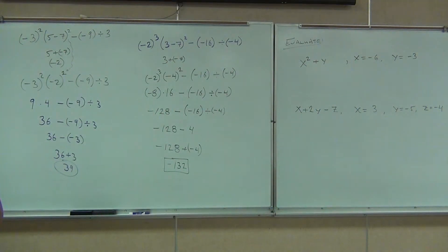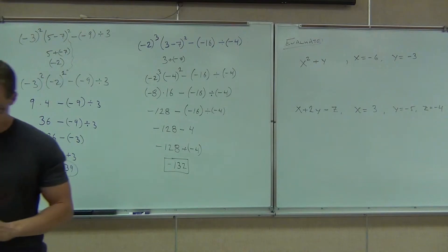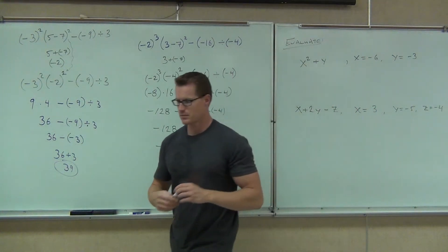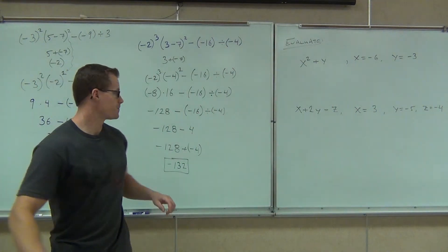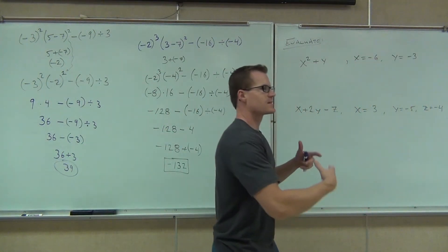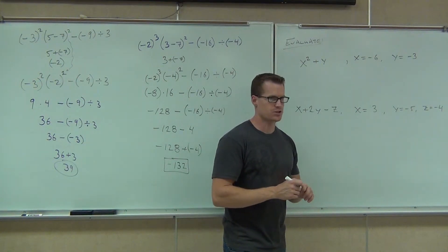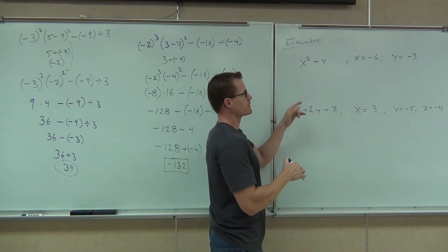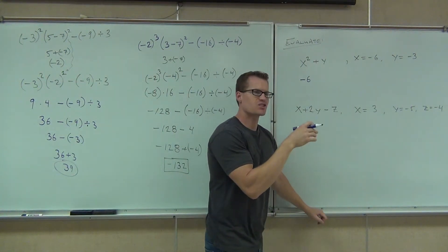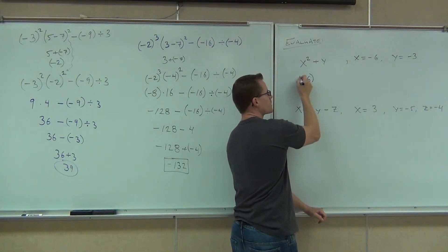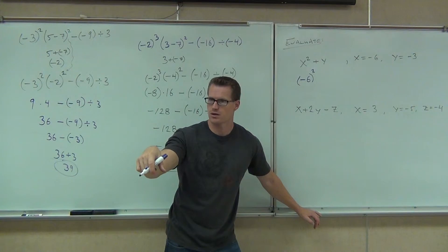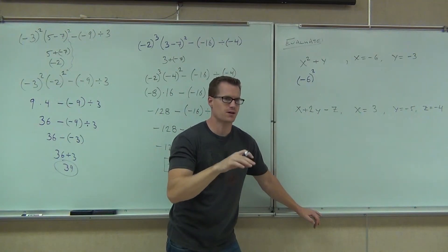We're going to do these two examples and that will wrap up our section. What's the first thing you do when you evaluate? When it says x squared, watch carefully — you need to see this. If it says x squared, what it means is you take your value and you square the whole thing. So if your x is negative, you have to put your x in parentheses. Notice how that says to take the negative with it.